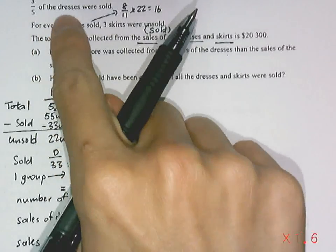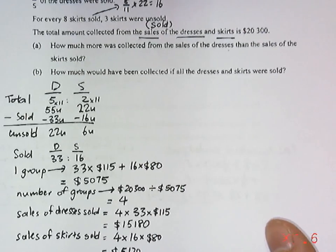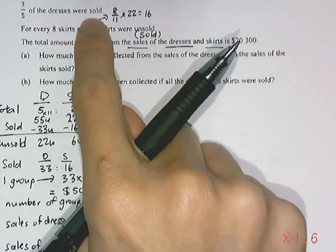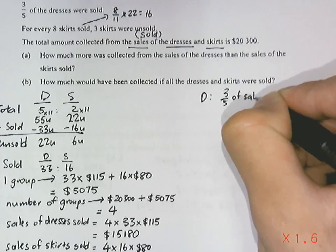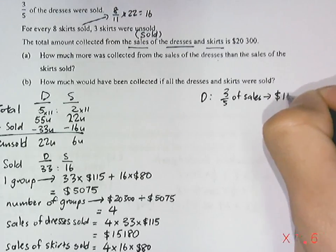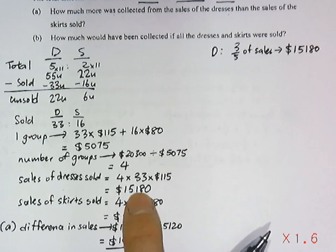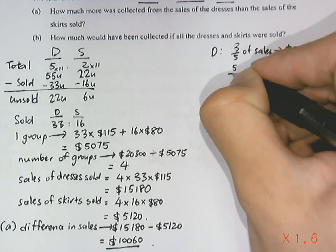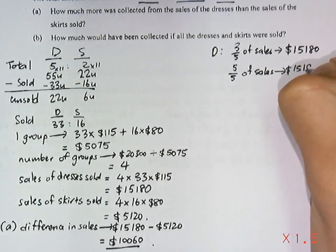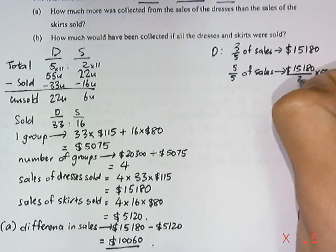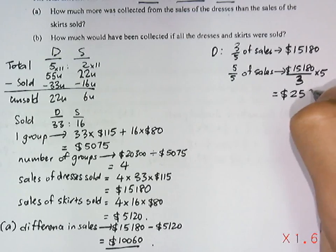Part B asks how much would have been collected if all items were sold. Since three-fifths of the dresses were sold, the fifteen thousand one hundred and eighty dollars accounts for three-fifths of total dress sales. Dividing by three and multiplying by five gives a total of twenty-five thousand three hundred dollars that would have been collected for all the dresses.